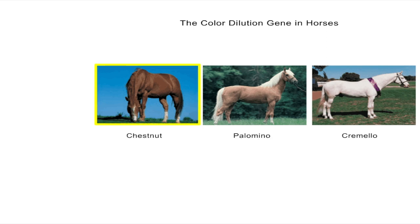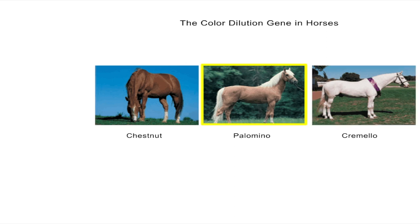Chestnut, also called sorrel, has a red pigment over the body and in the mane and tail. Cremello is extremely light-colored, almost white. Palomino appears as an intermediate between chestnut and cremello, and has a golden body color with a flaxen mane and tail.